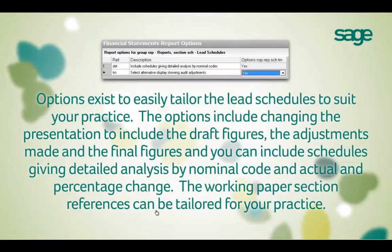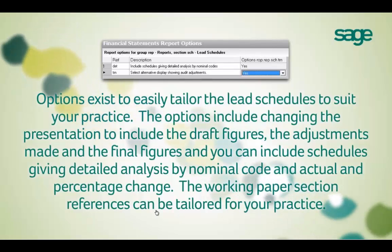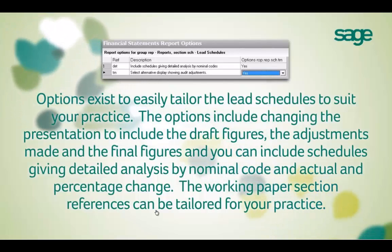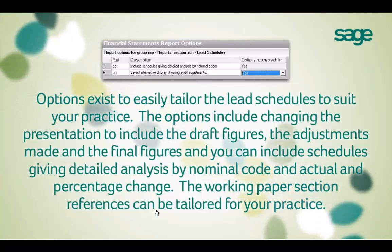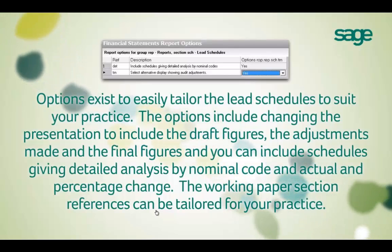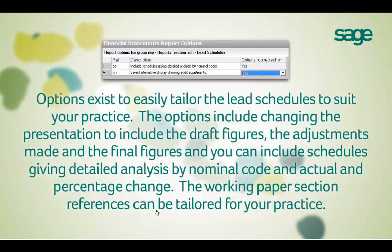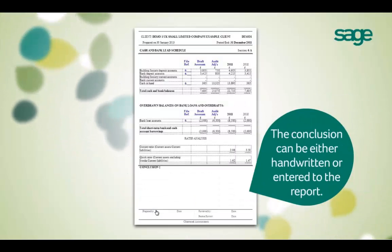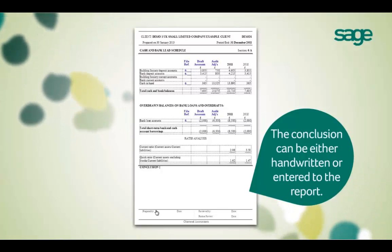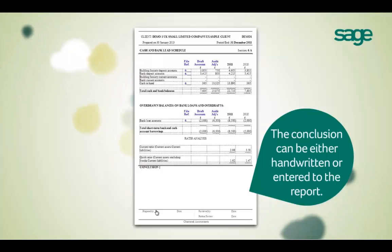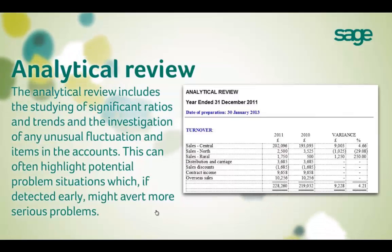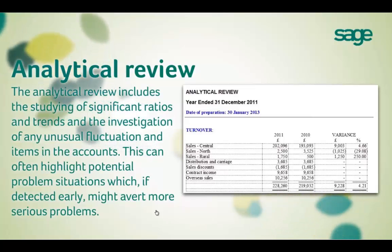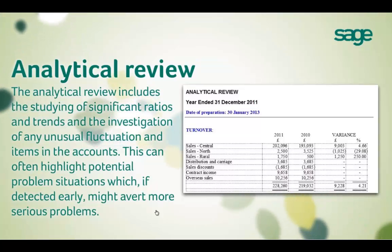There are also options to tailor the lead schedules to suit your own practice files. These include changing the presentation to include the draft figures, adjustments made and the final figures per the accounts. You can also include schedules which provide a detailed analysis by nominal code, along with actual and percentage change from prior year. We even allow you to tailor the working paper references to suit your normal file structure. You can manually write the conclusion onto the schedule or enter it electronically onto the report. There is also an analytical review report available for reviewing variances, trends and significant ratios.